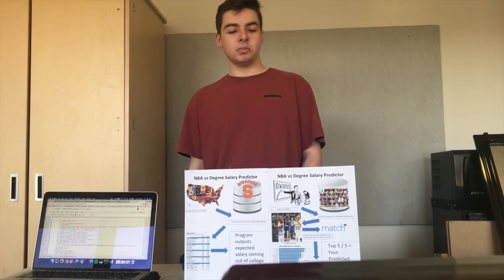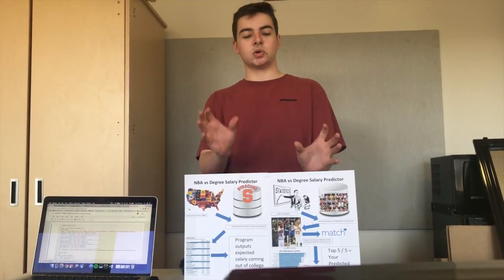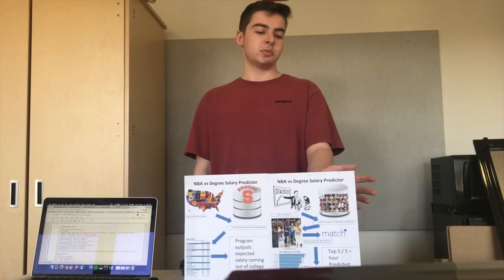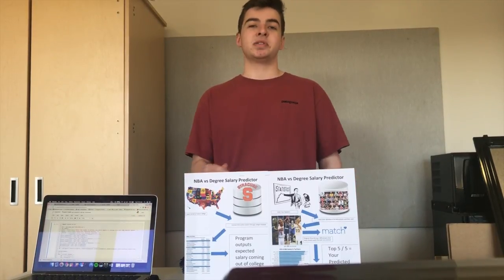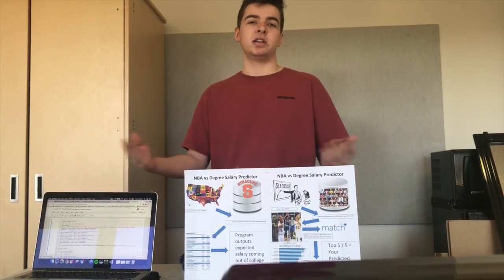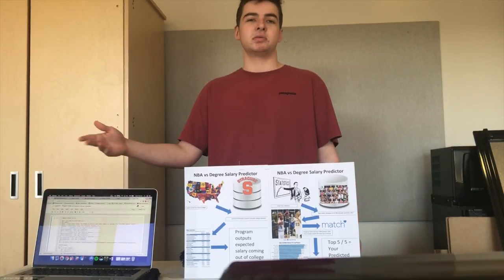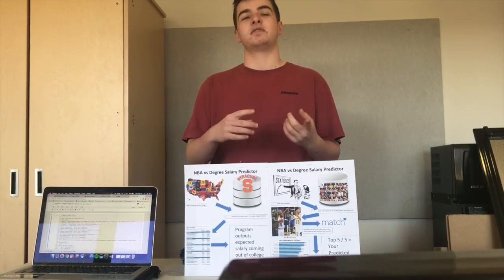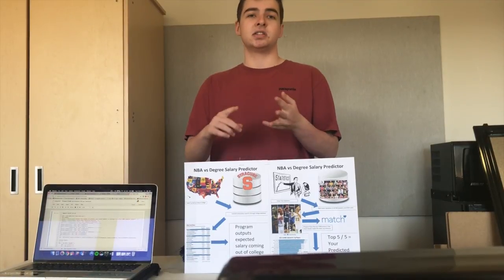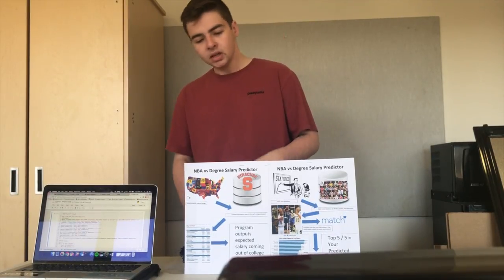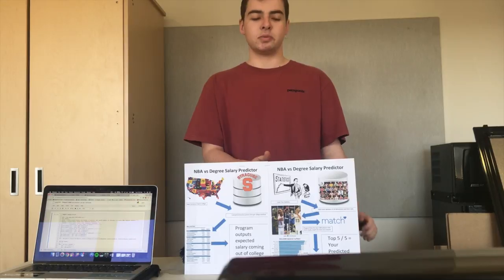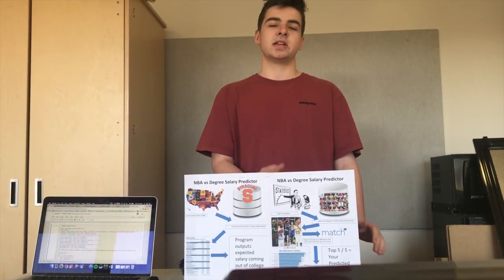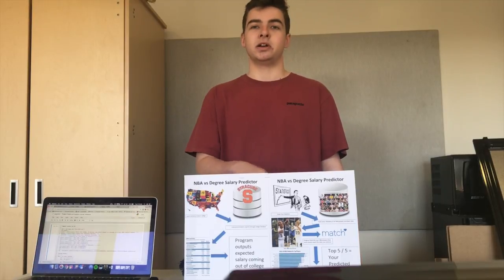We were able to solve this problem. As you can see by this poster, we have two different code sets in our project. The first part of our project would be to take hypothetical stats that any college player interested in the NBA would enter — stats they think they could average in an NBA season, say for example 10 points, 5 assists, and 2 rebounds. They would enter those statistics into our program, and then we would run them through our database of data for all NBA players and all of their stats.